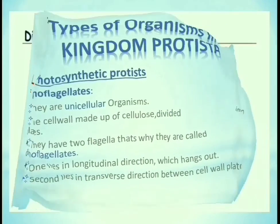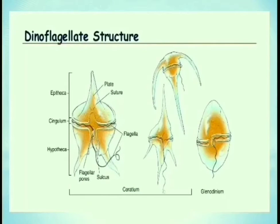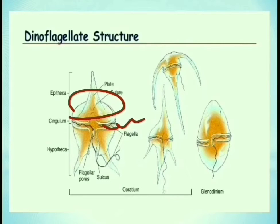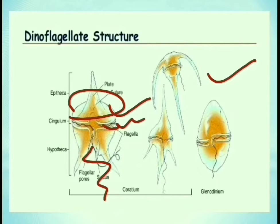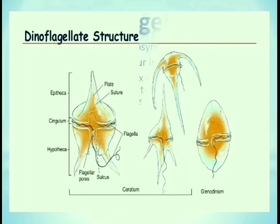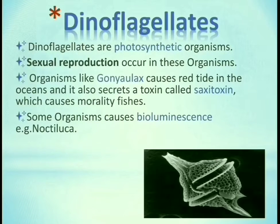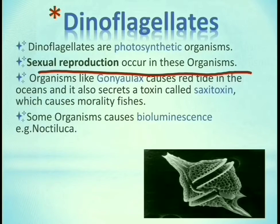Here you can see the structure of dinoflagellates — they have plates on their body. The transverse flagella goes around it and one flagella is hanging out. There are different types of structures in dinoflagellates. Dinoflagellates are photosynthetic organisms; they can make their own food. Sexual reproduction occurs in these organisms, meaning two parents are involved.